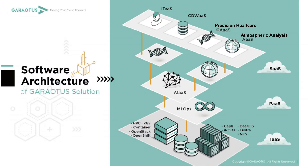Next, I am going to introduce our architecture. Looking from the bottom, we have the infrastructure layer. As I mentioned, we have an HPC cluster. We have virtualization management such as OpenStack, OpenShift, or Kubernetes. And on the other side is the storage, which I will mention later on.